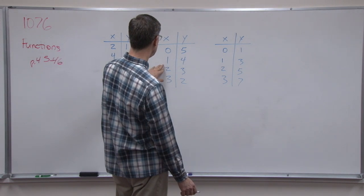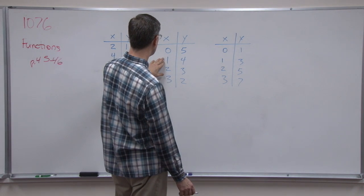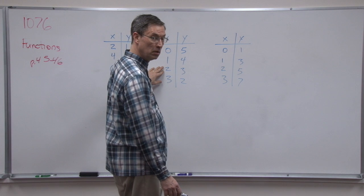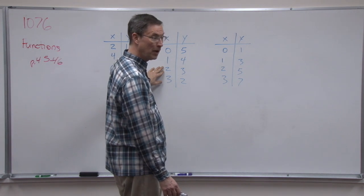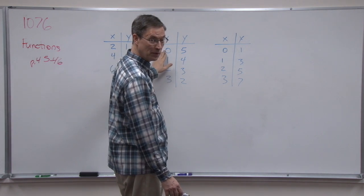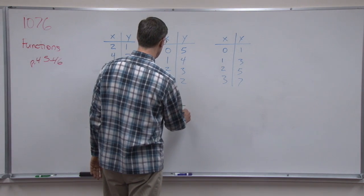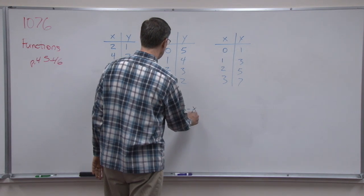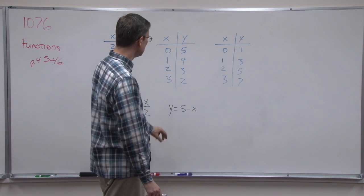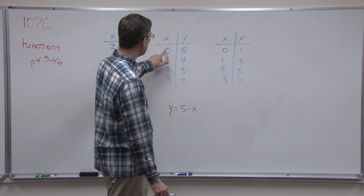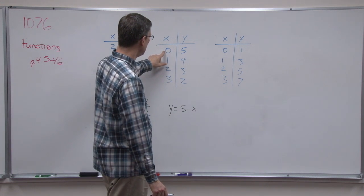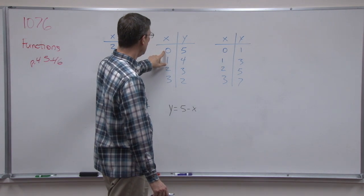Let's see if I see a pattern here. What's 1 plus 4? 5. What's 2 plus 3? 5. 3 plus 2 is 5. 0 plus 5 is 5. What if I do y equals 5 minus x? Let's see if that works. Now I can take x, plug in 0, 5 minus 0. Oh, that works!